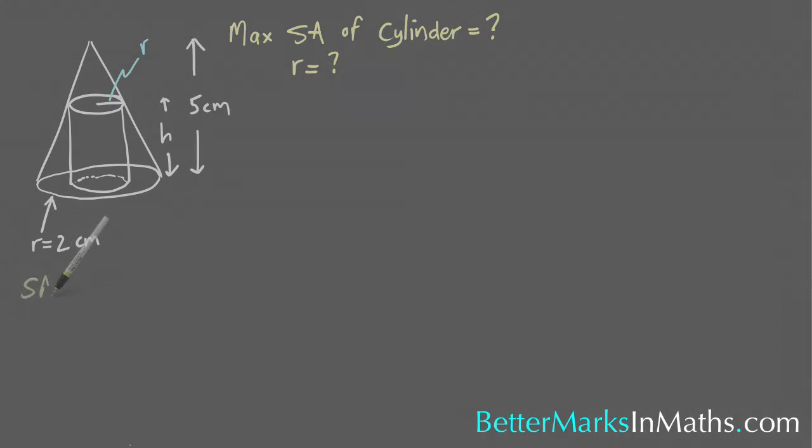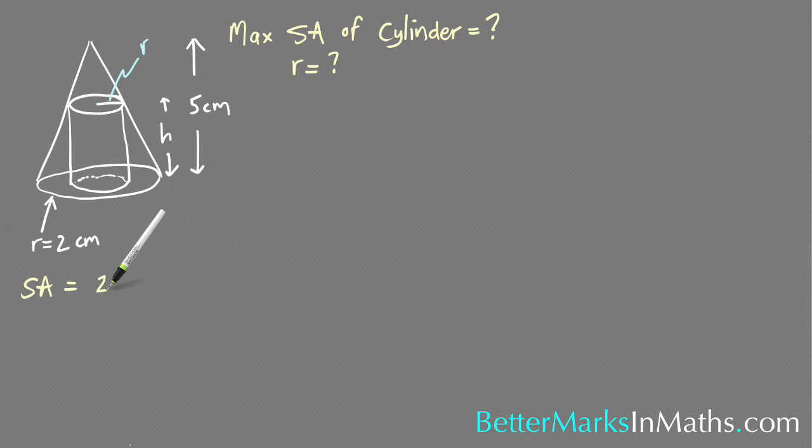So the formula for that area equals 2πr² - there are two circles, the top and the bottom, the base and the top of that cylinder - so 2πr² plus the area of that curved surface is the distance around that circle which is 2πr multiplied by the height.